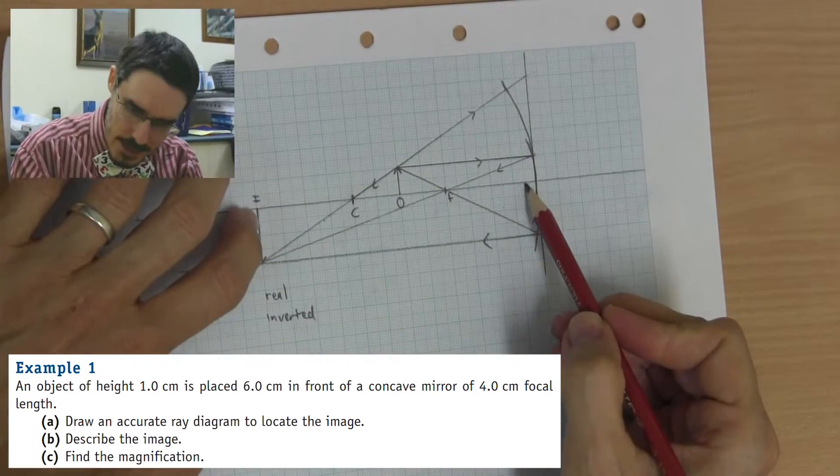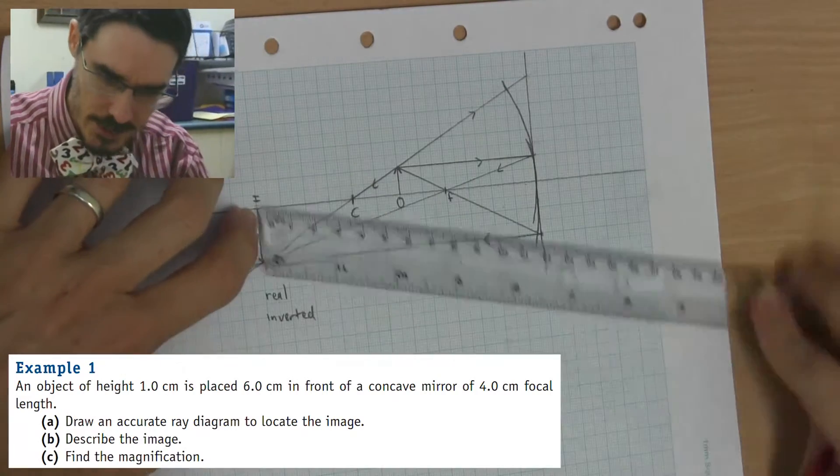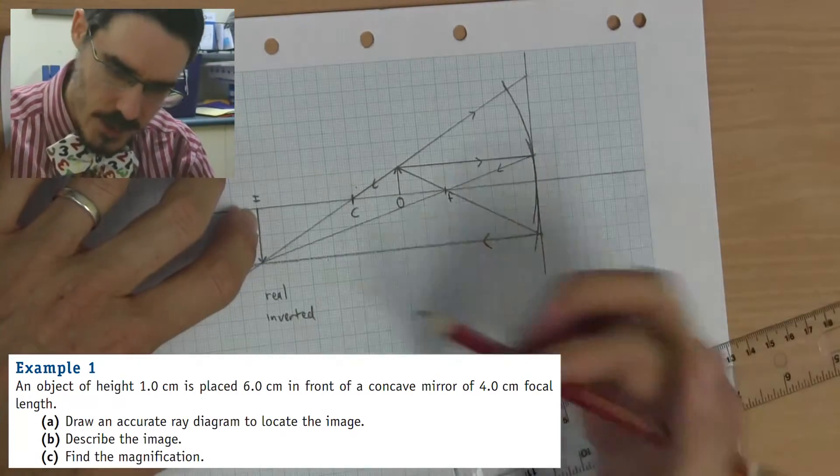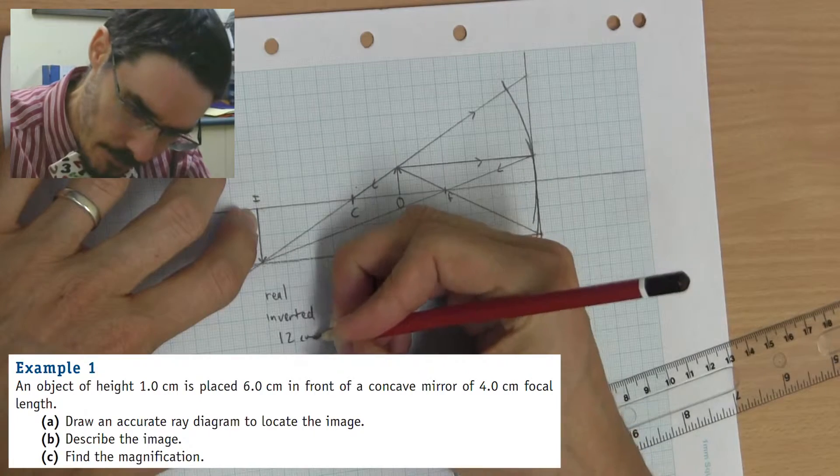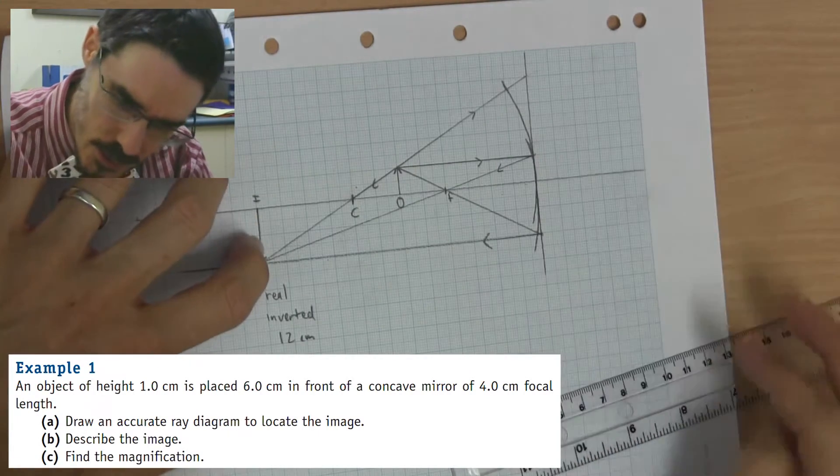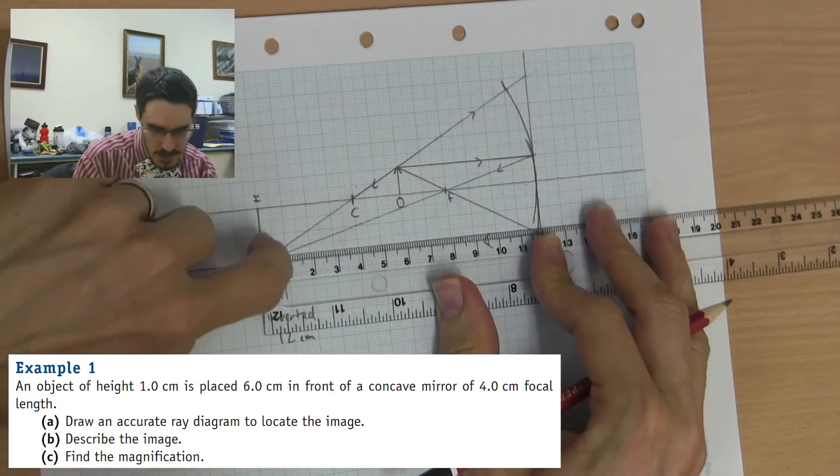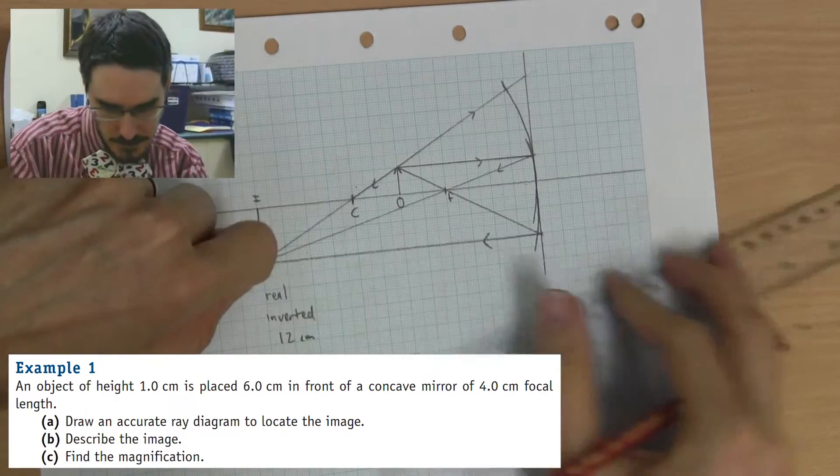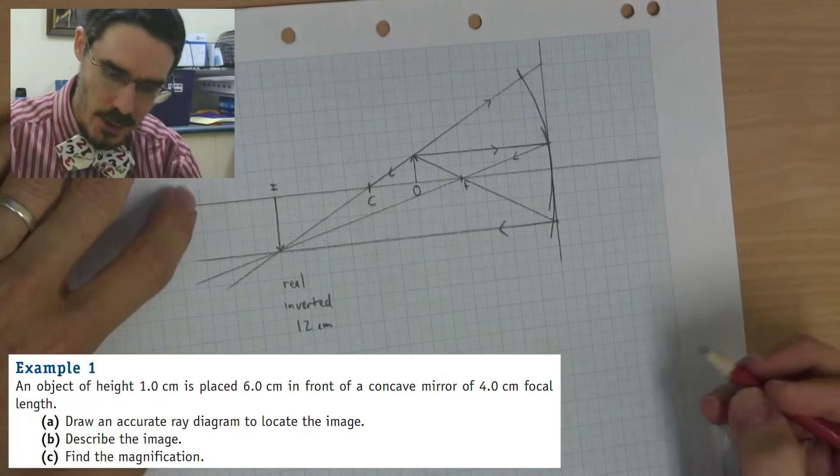And it is 4, 8, 12 centimetres. You can measure it if you like. 12 centimetres from the mirror. As I say, in practice, it's actually going to be slightly shorter and slightly closer. But, for the sake of this diagram, that's fine.